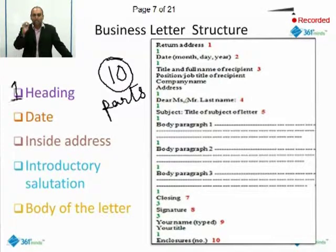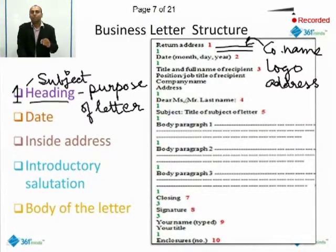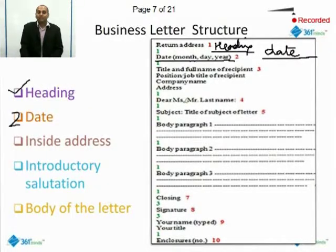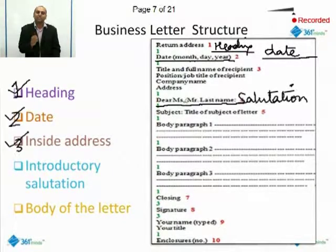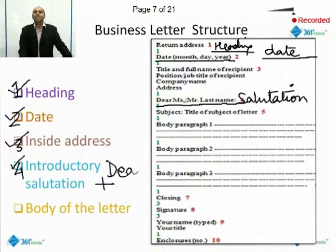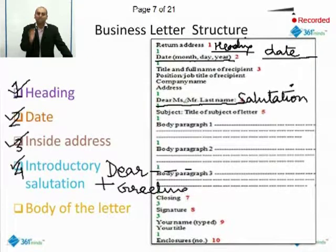The first component is the heading. The next important component is the date on which the letter is being written. Next is the inside address, which refers to who you are writing this letter for. Next, you have introductory salutations, which includes how you address the individual. And then, the body of the letter, which contains your message.